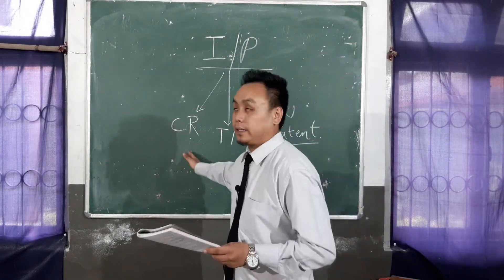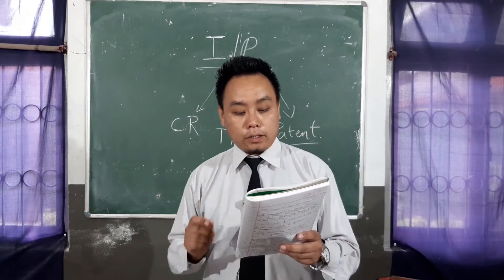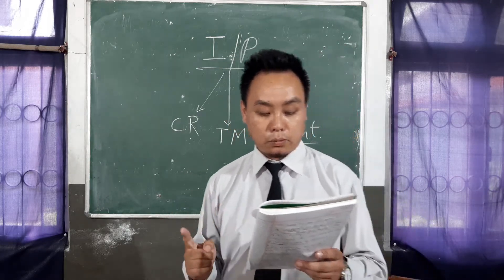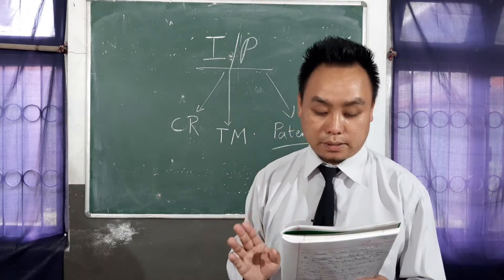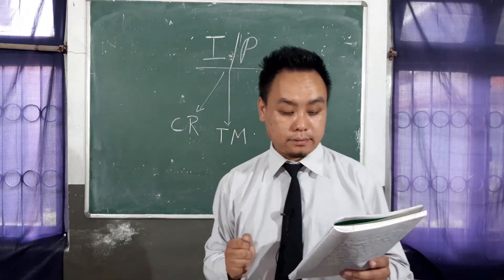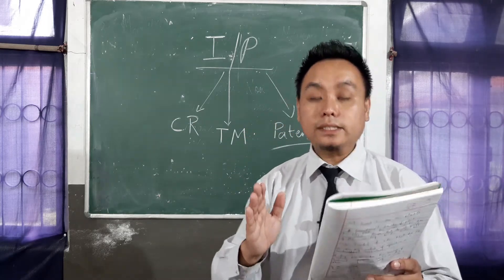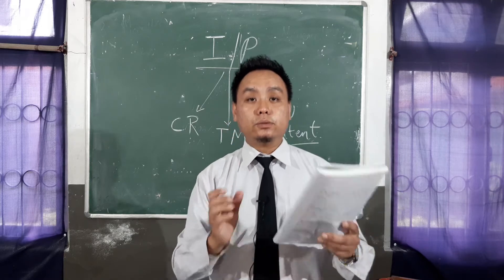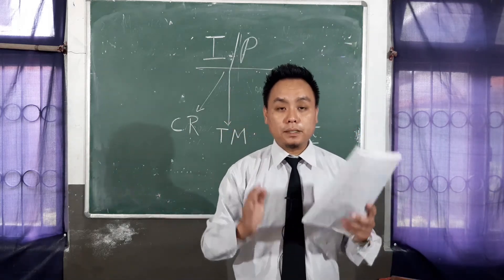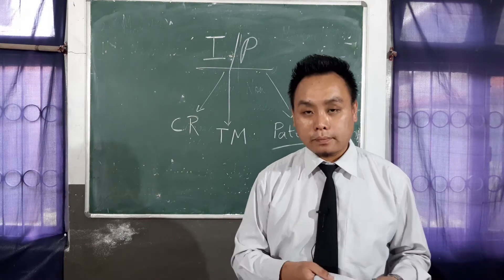Now, what inventions can be put under patent? There are basically three requirements. Number one: the invention must be novel — meaning it must be completely new. It must not be old; it must be completely the creator's own creation. For example, Facebook was created by its creator.